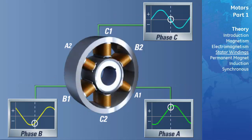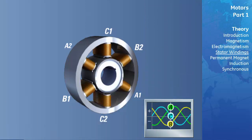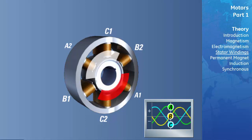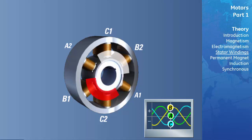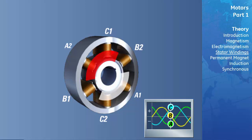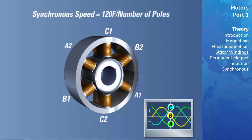If we compare the angular displacement of the field, we can see that it has rotated 60 degrees. If this evaluation is repeated every 60 degrees for the rest of phase A's cycle, we will see that the resultant stator field goes through one complete revolution, or 360 degrees. With a frequency of 60 hertz, this means in one second the field will go through 60 complete rotations, and in one minute, 3600 rotations. The speed of the rotating magnetic field is referred to as the synchronous speed, which can be calculated by the formula: synchronous speed equals 120 times the applied frequency divided by the number of poles. Applying this equation to a four-pole motor gives a synchronous speed of 1800 RPM.